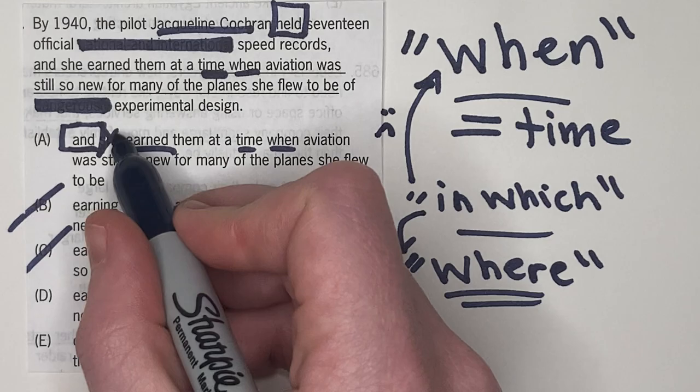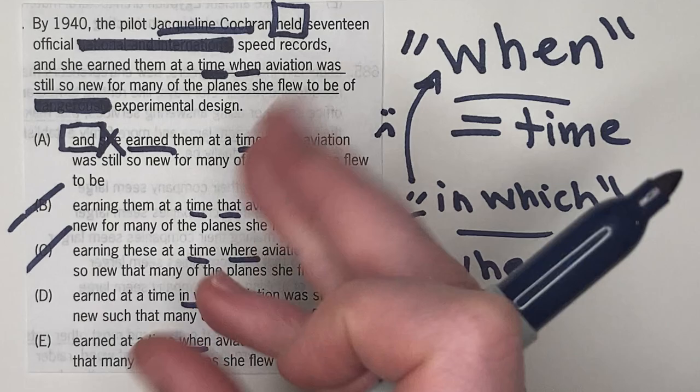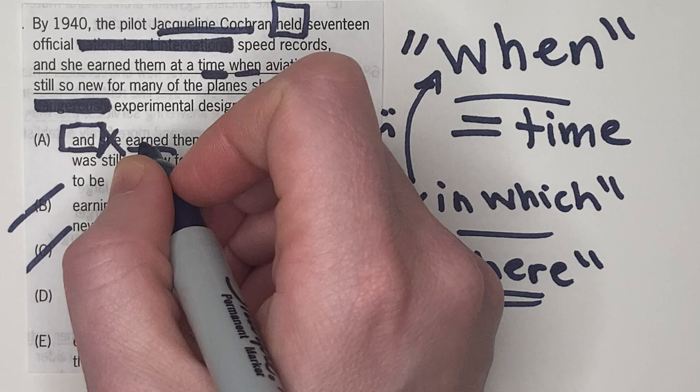Because it's very clear that this she is referring to Jacqueline. It couldn't refer to anyone else. So it's not parallel in A.